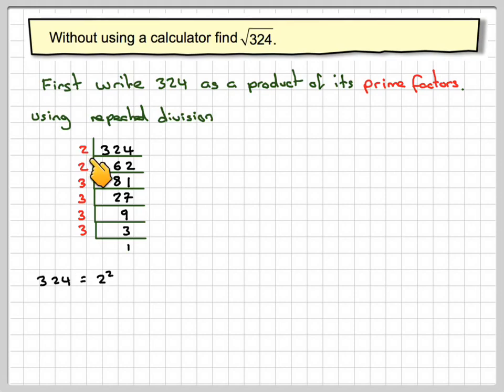Therefore, 324 will be 2 times 2, 2 squared. And then 3 times 3 times 3 times 3, which is 3 to the 4th.